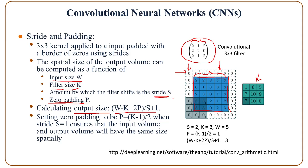Setting the zero padding to P equal to (K minus 1) divided by 2, when the stride S is equal to 1, ensures that the input volume and the output volume are the same size. For this given example, P is equal to 1, and the size of the output is (W minus K plus 2P) divided by S plus 1, which equals 3.